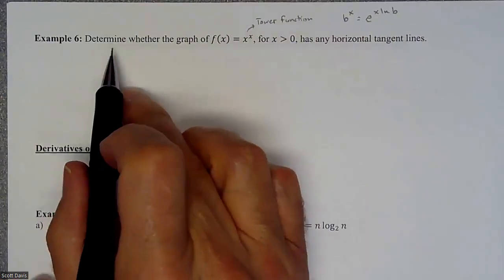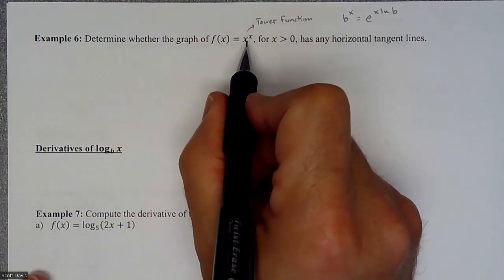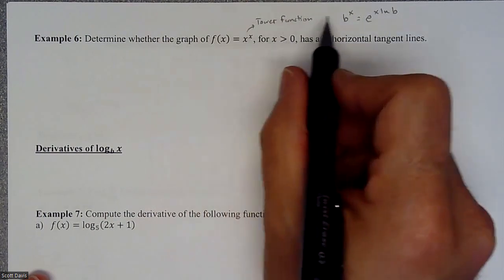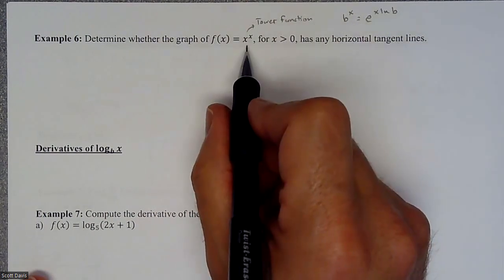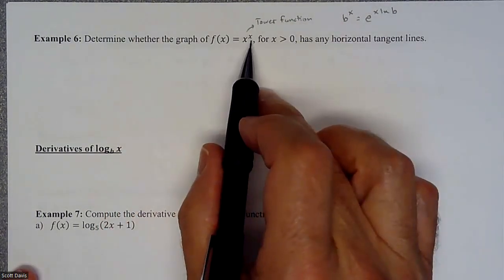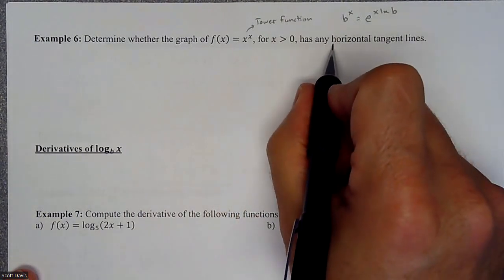In this example, we are going to be determining whether the graph of f(x) = x^x, for x > 0, has any horizontal tangent lines. When you have a power raised to a power, where x raised to x is called a tower function, we're going to have to do a little manipulation to do our derivative.